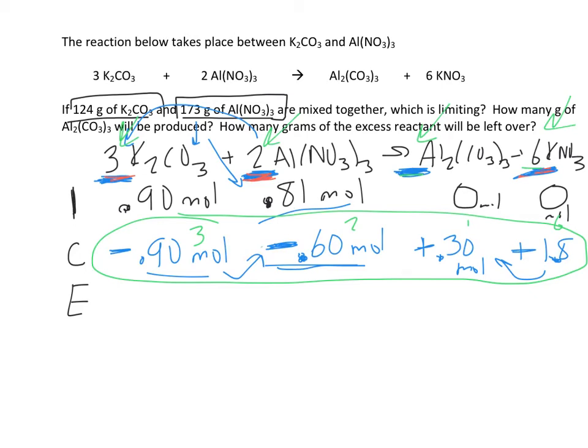So now how do they finish up? So this chemical, I had 0.9. I lost 0.9. So now there's 0 moles of that. This had 0.81. It lost 0.6. So there's 0.21 moles of that. This went from 0. It went up by 0.3. So there's 0.30 moles. And this is going to have 1.8 moles.